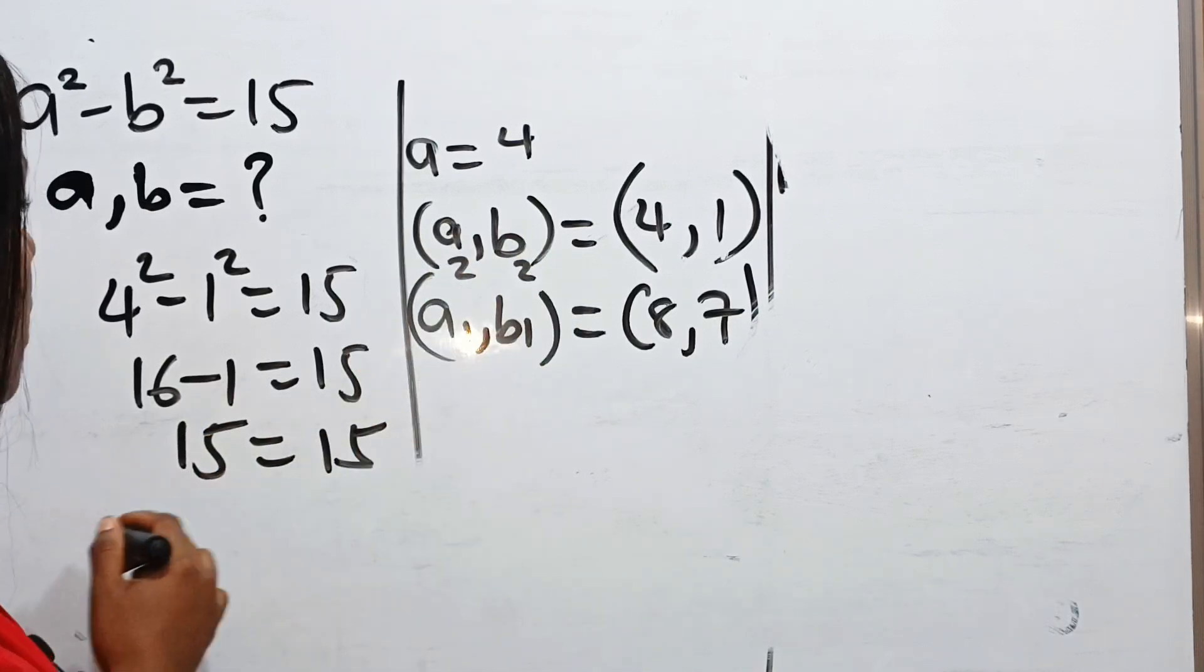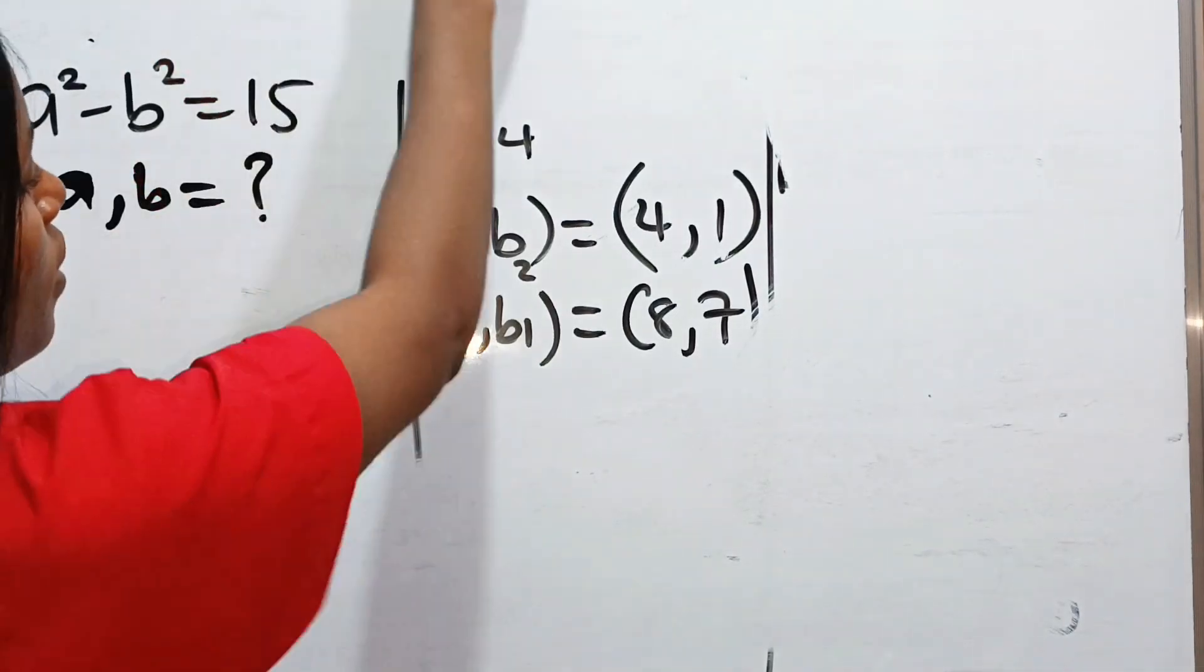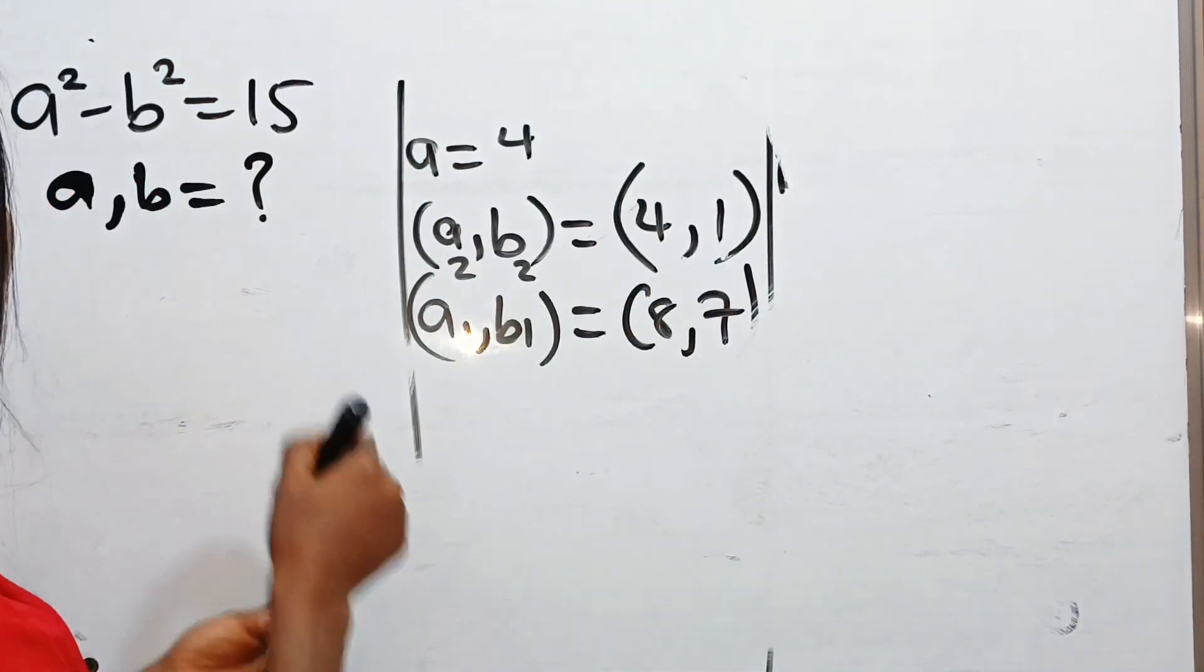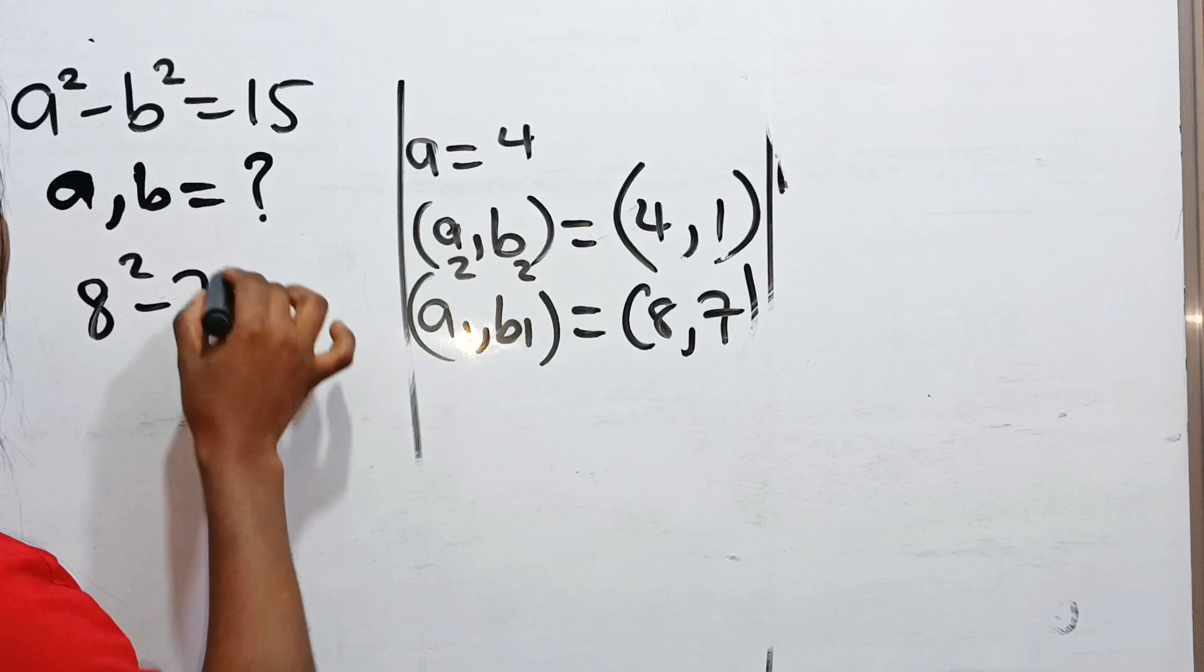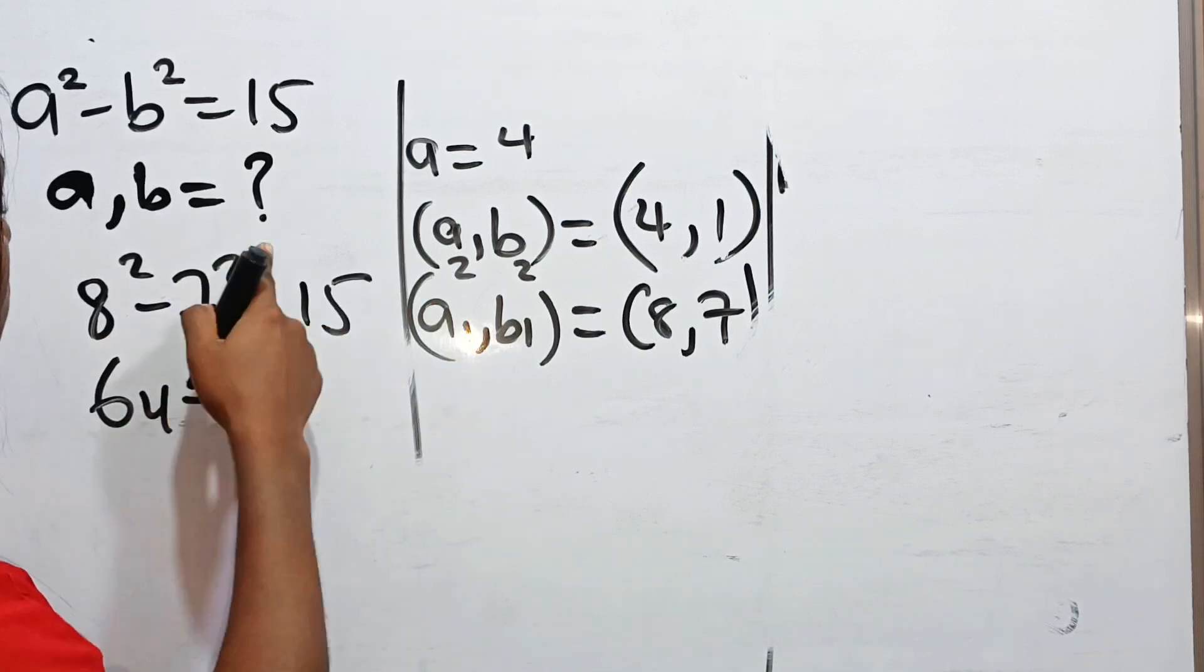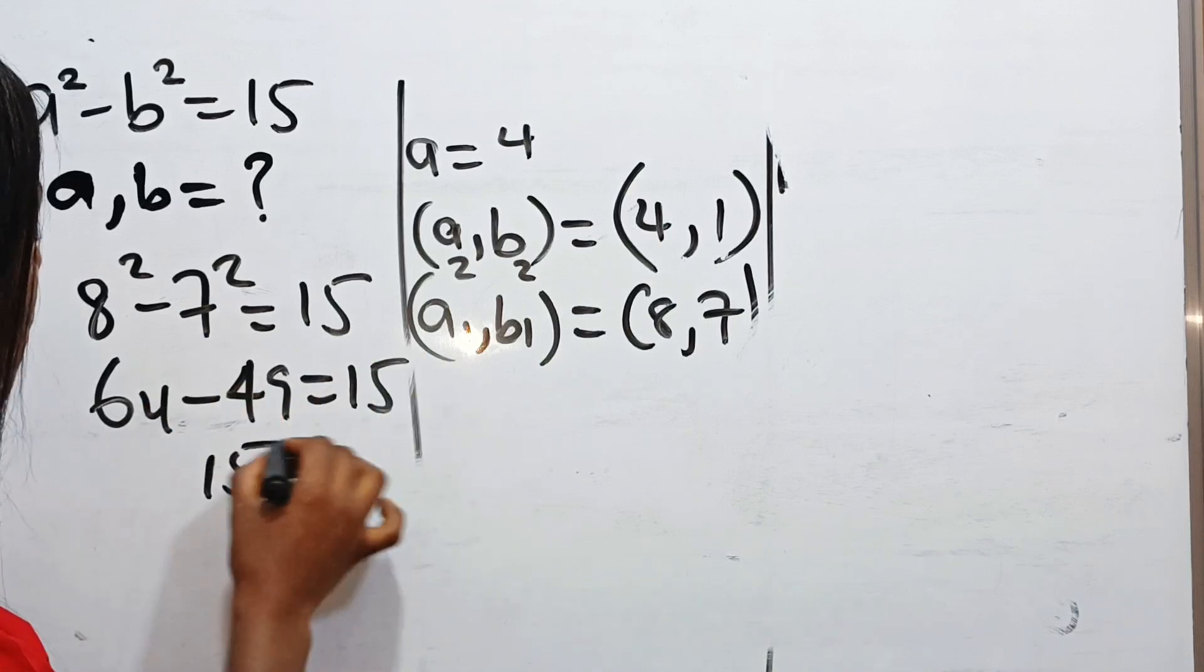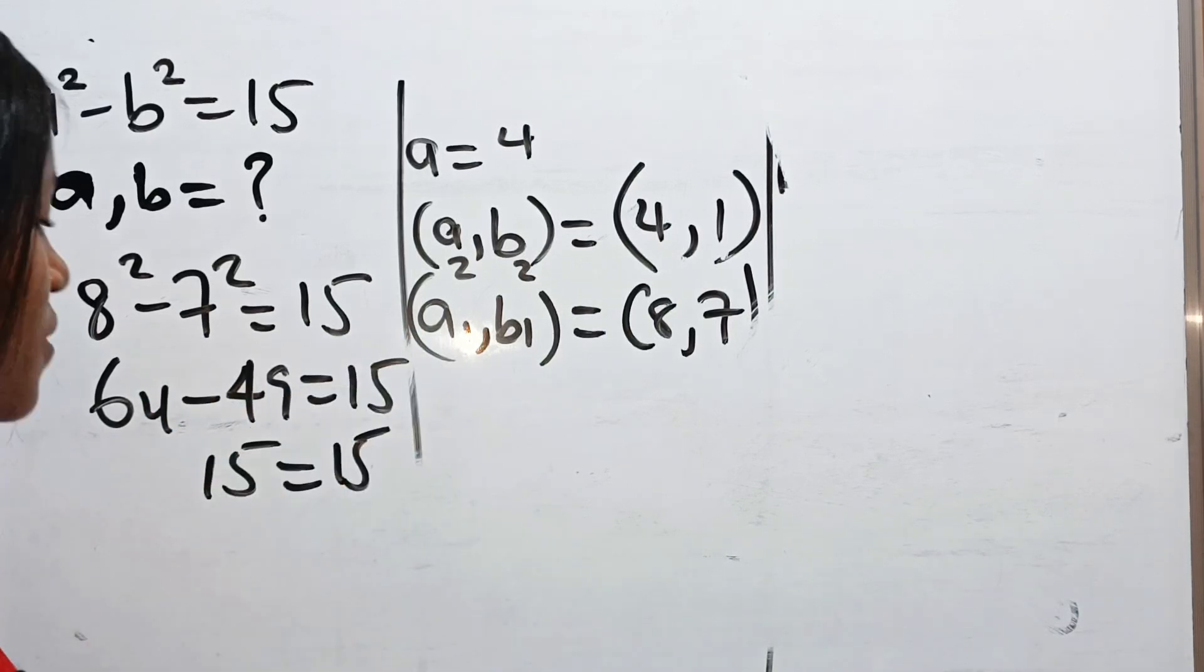Secondly, for the second one, our a is equal to 8 and our b is 7. So we have 8 squared minus 7 squared is equal to 15. 8 squared is 64. 7 squared is 49 is equal to 15. And you can see that 15 is equal to 15.